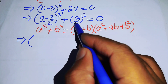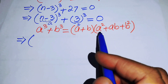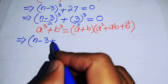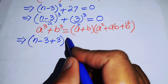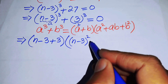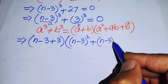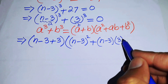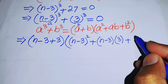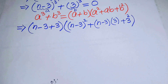The value of a is (n minus 3) and the value of b is 3. Substituting into the formula gives us (n minus 3 plus 3) times ((n minus 3) squared plus (n minus 3)(3) plus 3 squared) equals 0.